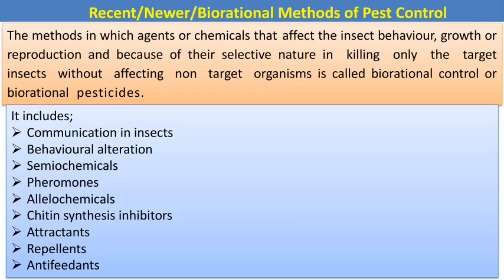These are the different recent, newer, or biorational methods of pest control. Biorational pest control refers to methods in which agents or chemicals affect insect behavior, growth, or reproduction. Because of their selective nature in killing only target insects without affecting non-target organisms, these chemicals are called biorational pesticides and the methods are called biorational controls.